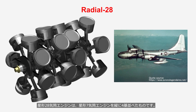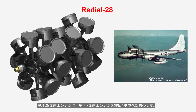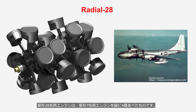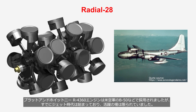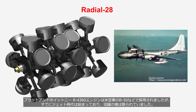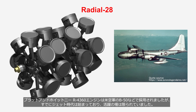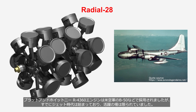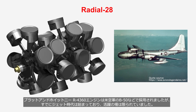The radial 28-cylinder engine is a configuration in which four radial 7-cylinder engines are arranged vertically. The Pratt & Whitney R-4360 engine was adopted in the U.S. Air Force's B-50 and others, but the jet age had already begun and its opportunities for active use were limited.